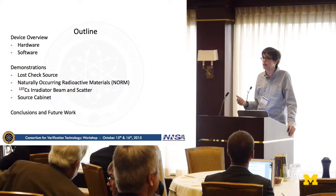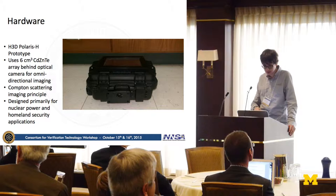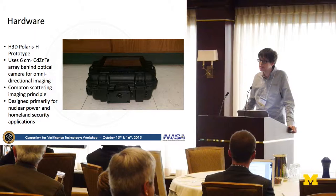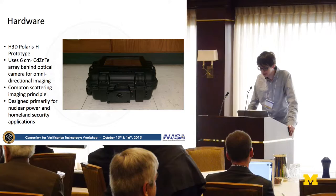The first thing is the Laris H prototype. There's a slight typo here — it isn't an array of crystals, but it does use a six centimeter cube crystal. It is a Compton imager and uses the Compton scattering imaging principle to develop an image of gamma rays. It was originally designed for nuclear power and homeland security applications, but we're using it for some other things.